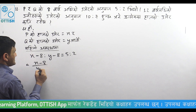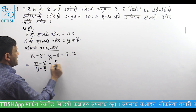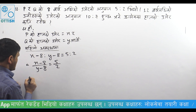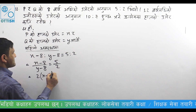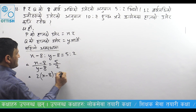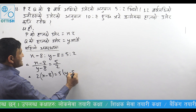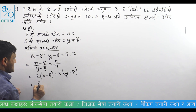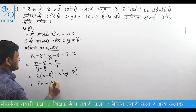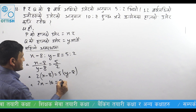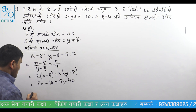X minus 8 upon Y minus 8 is equal to 5 upon 2. Now cross multiply: 2 times X minus 8 is equal to 5 times Y minus 8. So 2X minus 16 is equal to 5Y minus 40.